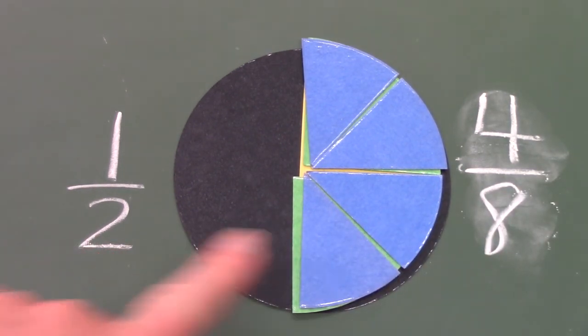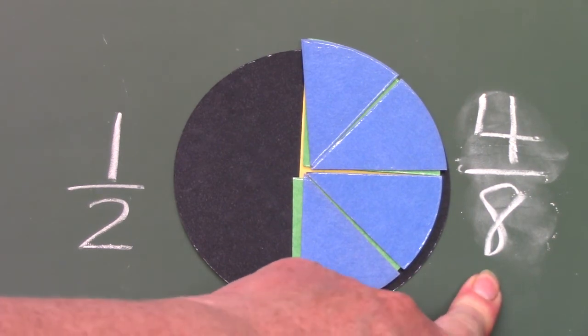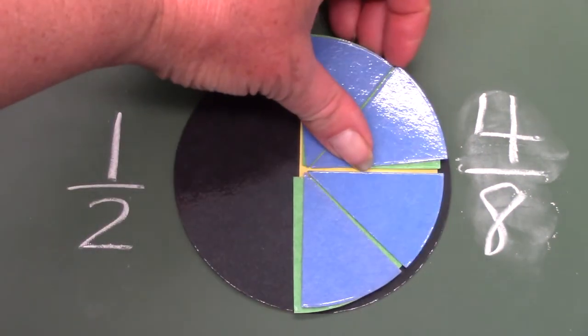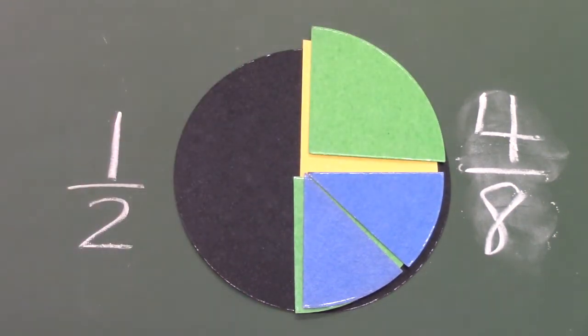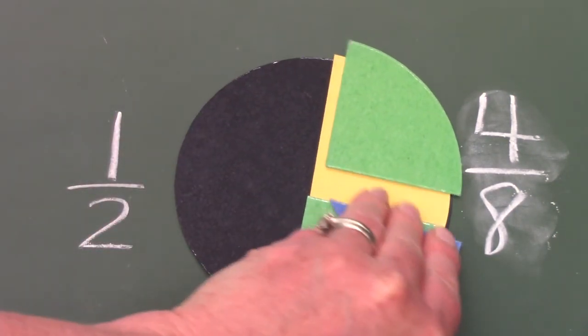One-half of a circle is the same amount as four-eighths of a circle. And it is the same amount as two-fourths.